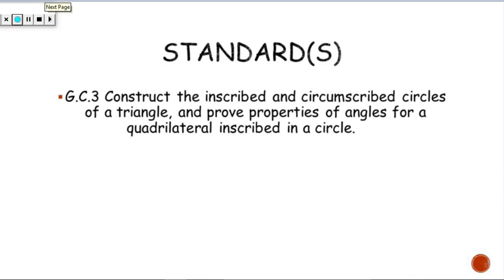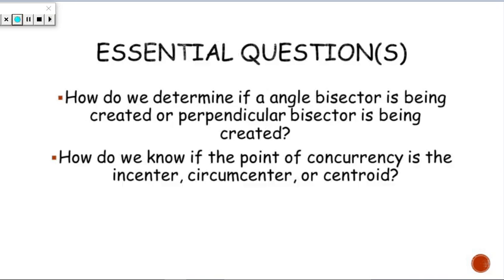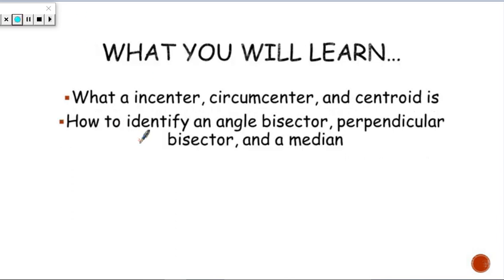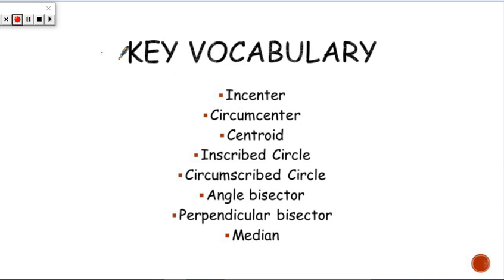The standard we're going to look at is some new and some not new. We're going to talk about inscribed and circumscribed circles of a triangle — just the first part. What you're going to learn is what an incenter, circumcenter, and centroid are, and how to identify an angle bisector, perpendicular bisector, and a median. I'm going to go over all of these keywords.